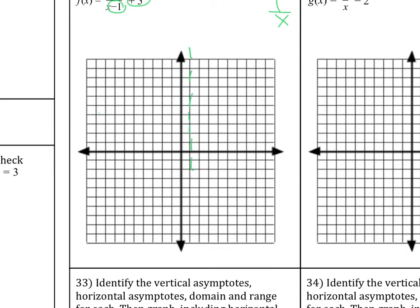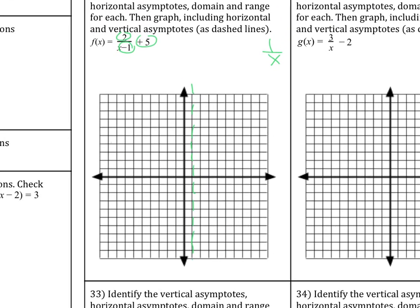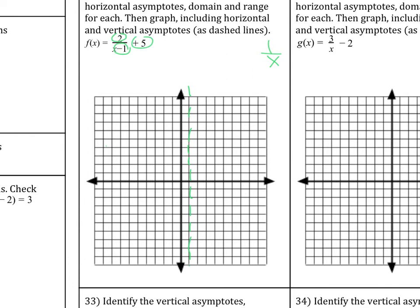That would be undefined. So that is not allowed. So that is our vertical asymptote. Then we have our y value at 5. It can never equal 5. So that is our horizontal asymptote.